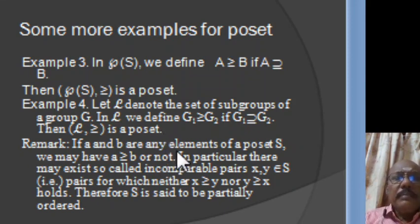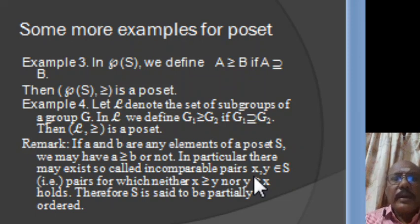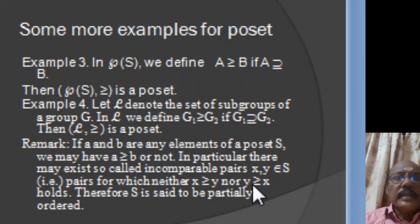If A and B are any elements of a poset S, we may have A ≥ B or not. In particular, there may exist so-called incomparable pairs X, Y in S — that is, pairs for which neither X ≥ Y nor Y ≥ X holds. That is why S is called a partially ordered set.